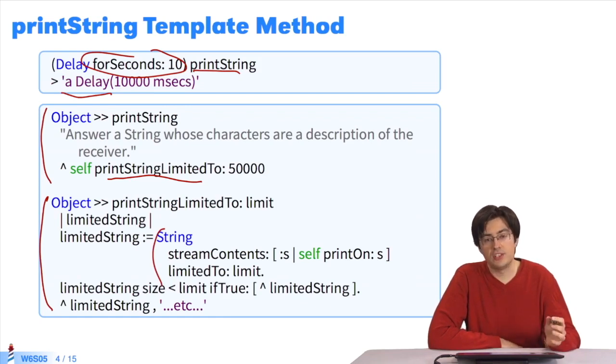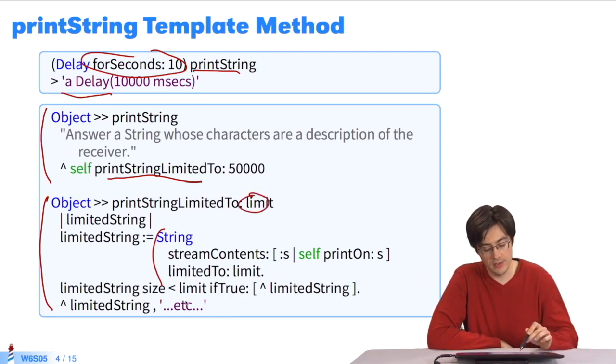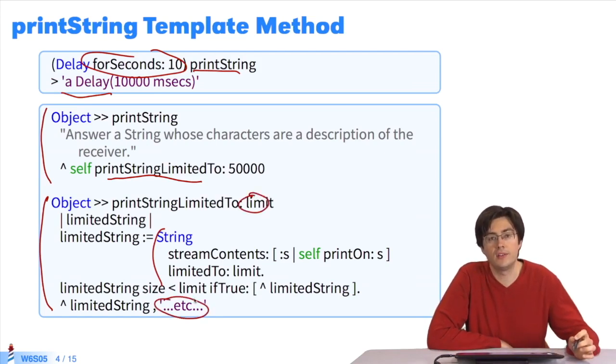And if this string of characters is too long, we can cut it off at a certain limit. Then at the end, we concatenate with dot dot dot to say the string is not done.